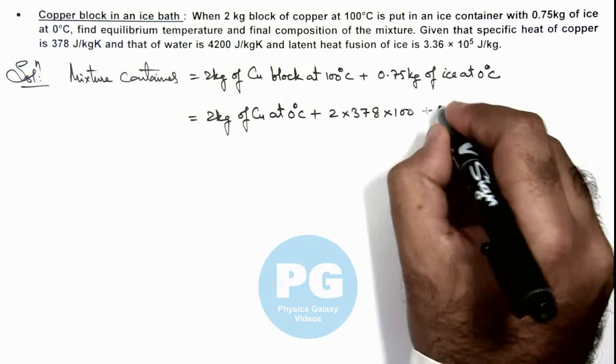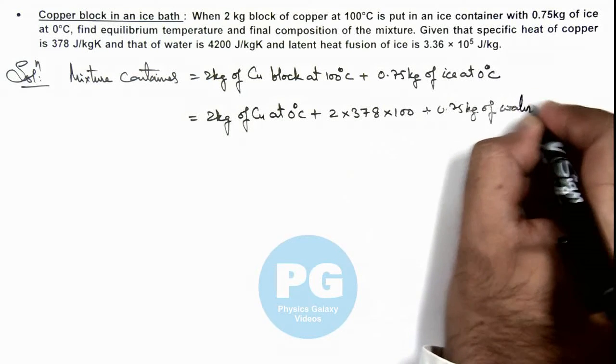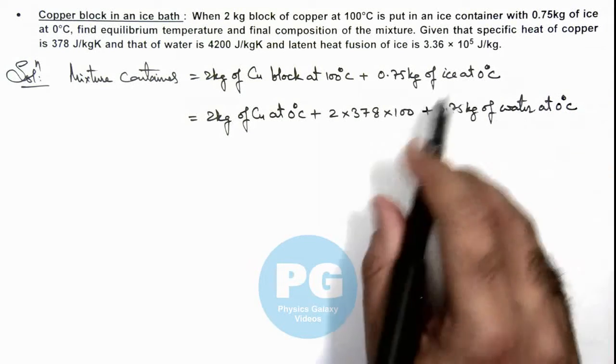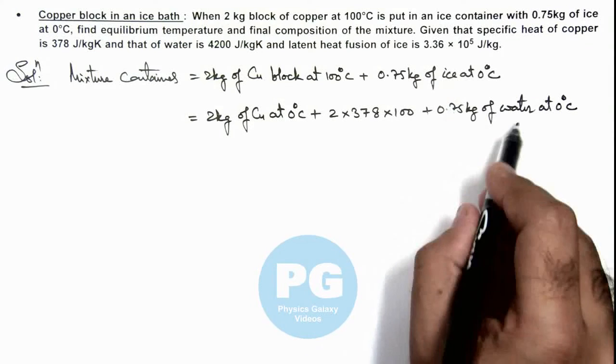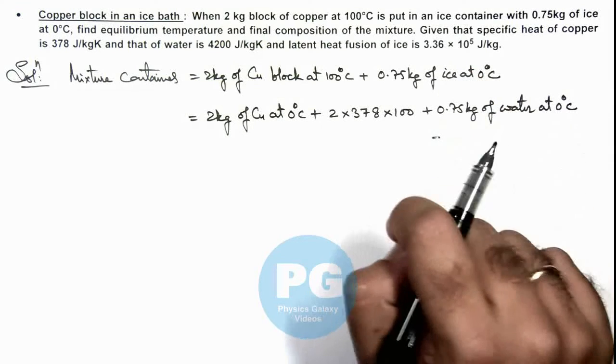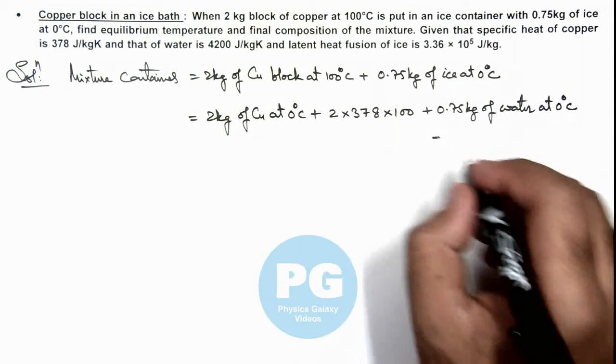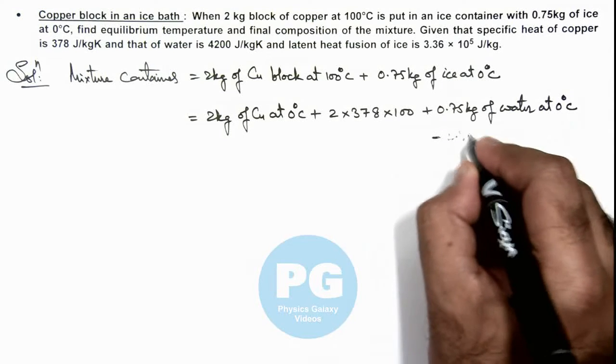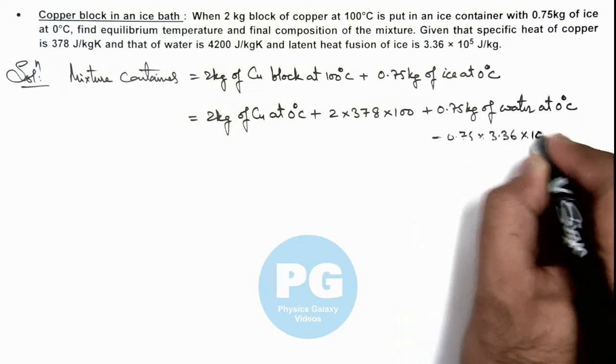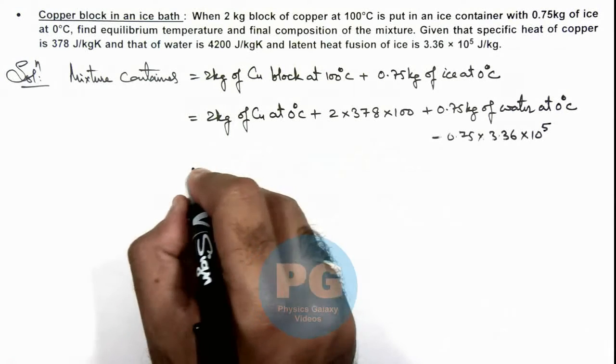Plus we'll be having 0.75 kg of water at 0°C as some amount of heat when absorbed by ice it'll transform to water. And the amount of heat which is absorbed by ice we'll write with a negative sign, which is m × latent heat of fusion which is 0.75 × 3.36 × 10^5.